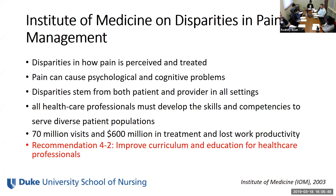The document summarized that pain disparities exist in how pain is perceived and treated; that pain can cause psychological and cognitive problems; that disparities stem from both patients and providers in all settings, from the operating room to primary care; and that all healthcare professionals must develop skills and competencies to serve diverse patient populations. They also summarized that there are 70 million visits and $600 million in treatment and lost work productivity related to pain. They made recommendation 4.2 specifically: that in order to improve upon the pain disparity, we can improve curriculum and education for healthcare professionals.